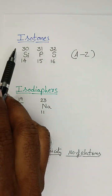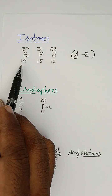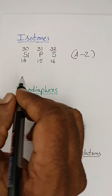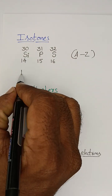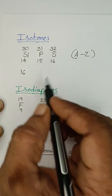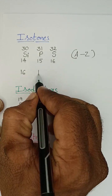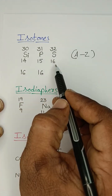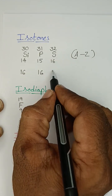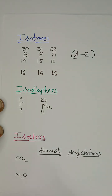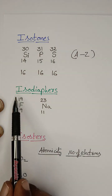So, A minus Z is applied to each. 30 minus 14 equals 16. 31 minus 15 equals 16. 32 minus 16 equals 16. These are examples of isotones — all having 16 neutrons.